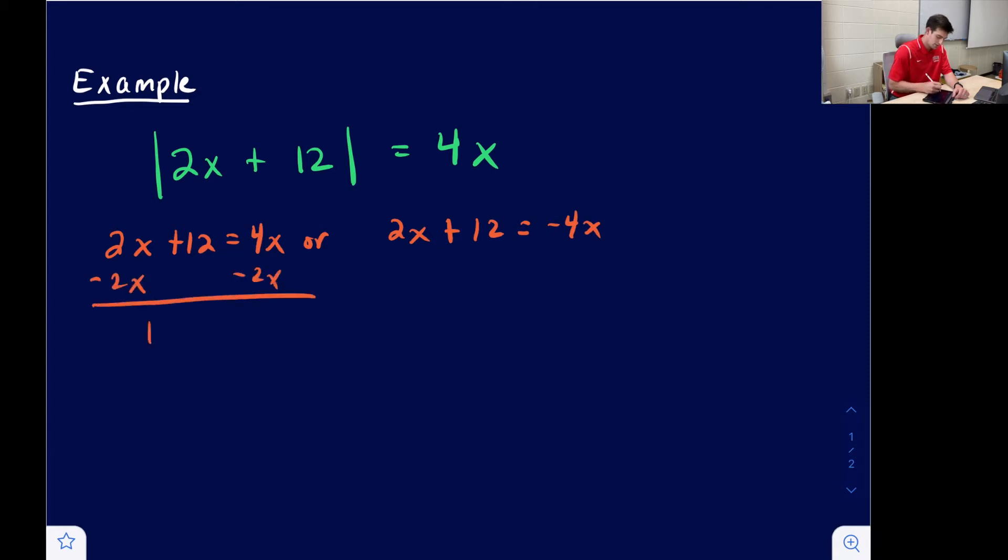Subtract 2x, 12 equals 2x, divide by 2, and we get x equals 6 from this equation. Or we could subtract 2x, negative 6x, divide by negative 6, and we get x equals negative 2.